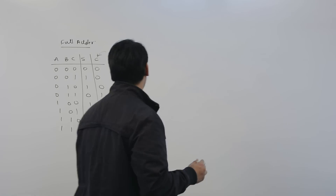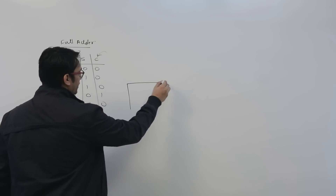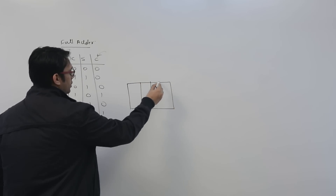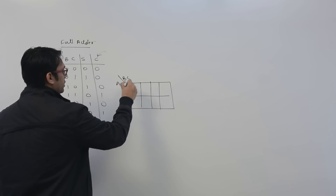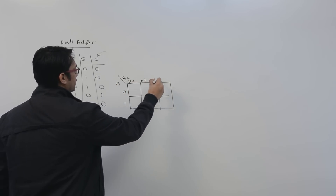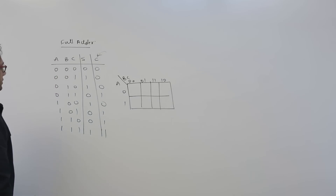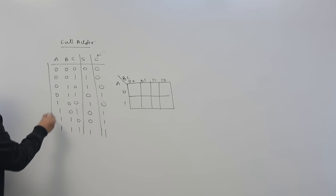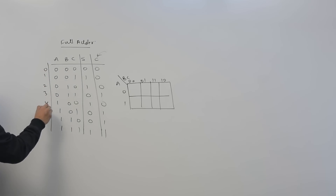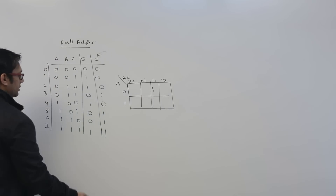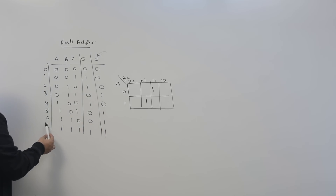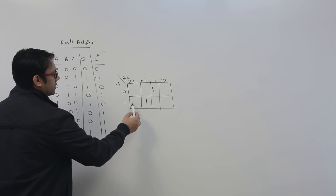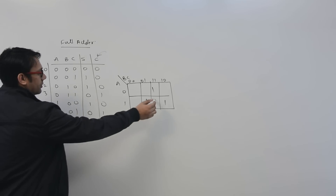We just need to identify what the equation for carry is. Let us implement this carry using a KMAP. The KMAP has A on one axis and BC on the other, with values at positions 0 through 7. The carry output is 1 at positions 3, 5, 6, and 7, corresponding to inputs where at least two of a, b, c are 1.